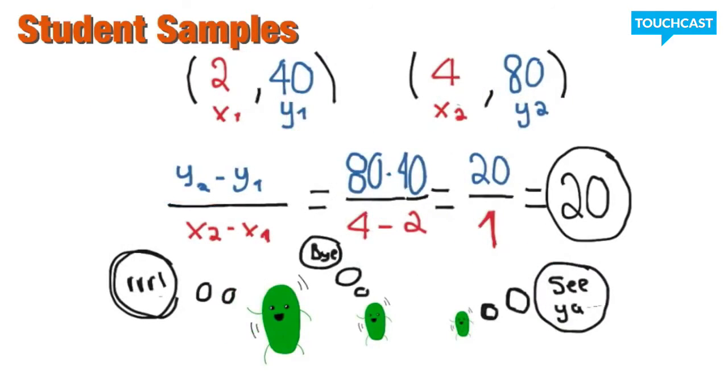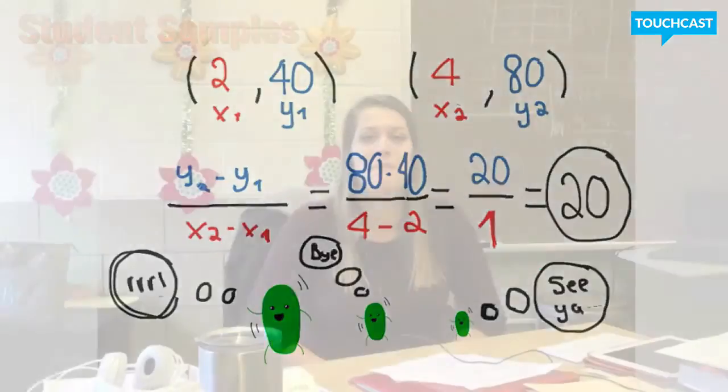80 minus 40 equals 20, 4 minus 2 equals 1, and 20 over 1 can be reduced to 20. I learned a lot from this, and I thought it was a good way to be able to see the students work out all their problems and explain it to me, and I plan on using it again.